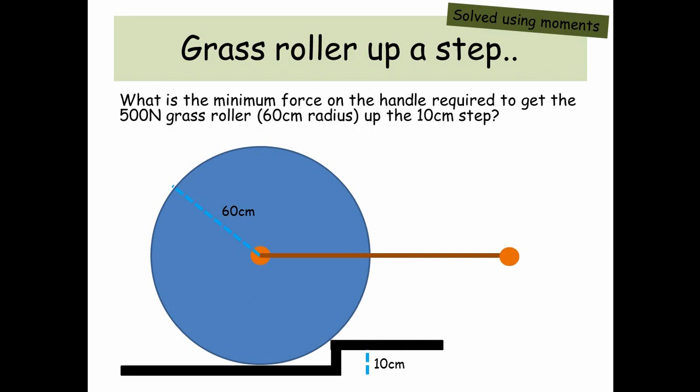Grass roller up a step. What is the minimum force on the handle required to get the 500 newton grass roller with a 60 centimetre radius up the 10 centimetre step? So it's 500 newtons going down and then we've got a force from the handle. Ok so the distance from the handle to, well if you imagine the actual step as being like a pivot point, the perpendicular distance from the line of action of the force to the pivot is 50 centimetres which is 0.5 metres.